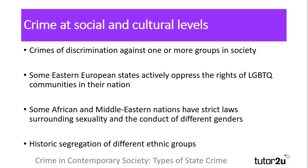Finally, McLaughlin suggests that crimes at social and cultural levels are a form of state crime. The most obvious examples are discrimination against one or more groups in society. Recent developments in Eastern Europe have seen states actively discriminate against members of the LGBTQ community, as well as reversing the law governing a woman's choice to terminate a pregnancy in Poland. It is illegal to be gay in over 70 countries worldwide, with many in the Middle East, Asia and Africa. Brunei is one place where homosexuality can be punished with stoning, while in Indonesia public corporal punishment is carried out for same-sex sexual activity. There has also been historic segregation of ethnic groups, most notably in the US under the Jim Crow laws, and even after their repeal many African Americans were limited in the property they could buy well into the 1980s — a process known as redlining.